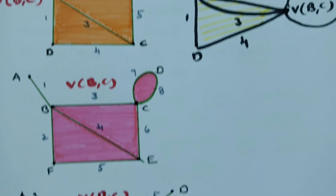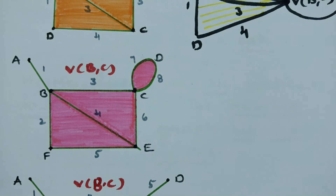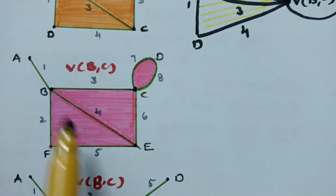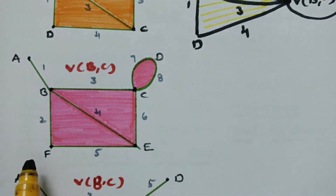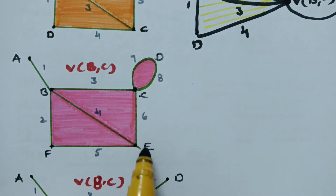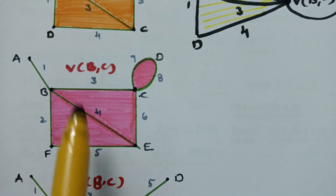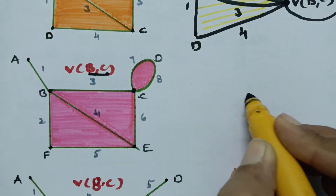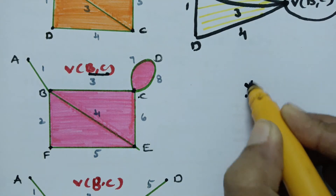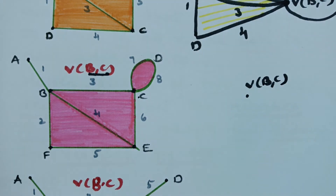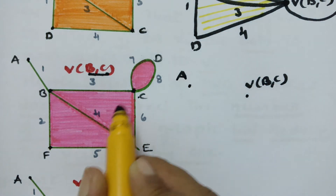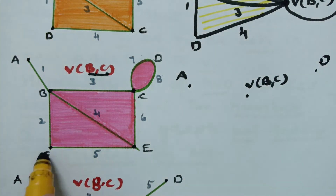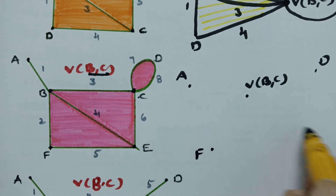The next example is a graph with vertices A, B, C, D, E, and F — six vertices in total. B and C are fused into a single new vertex. A is in the same position, D is in the same position, F is in the same position, and E is in the same position.